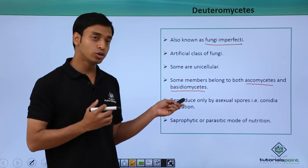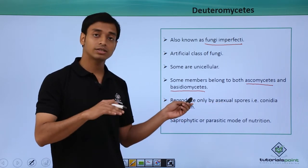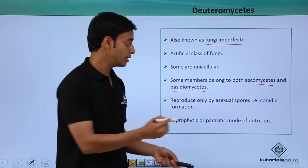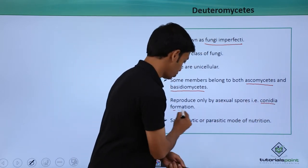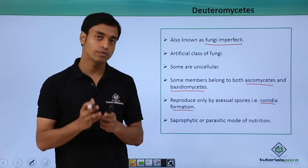They reproduce only by asexual spores, which are basically conidia formation. Through formation of conidia, they can reproduce asexually.